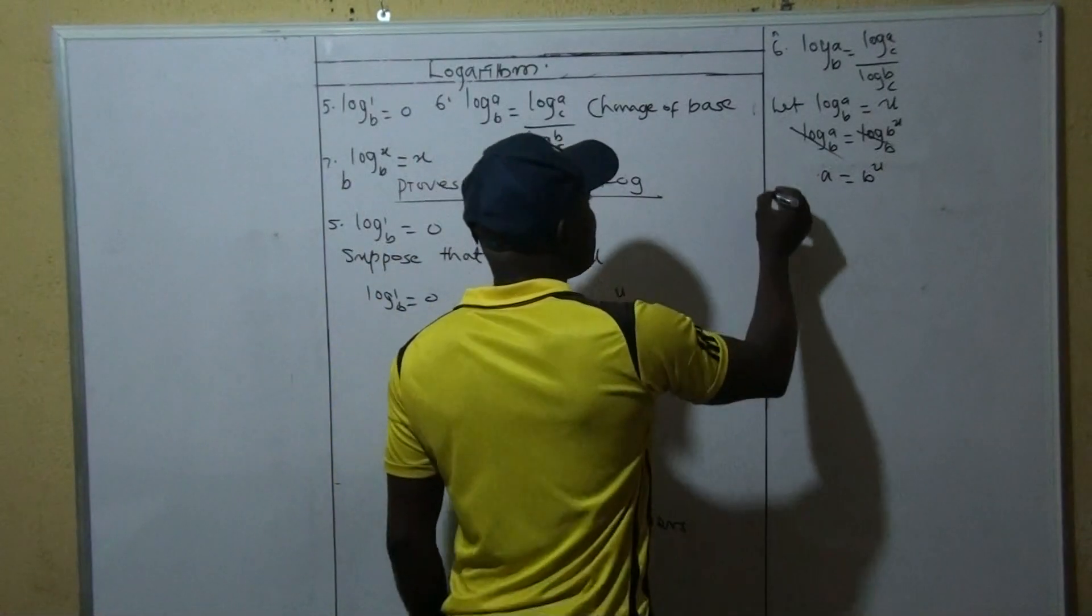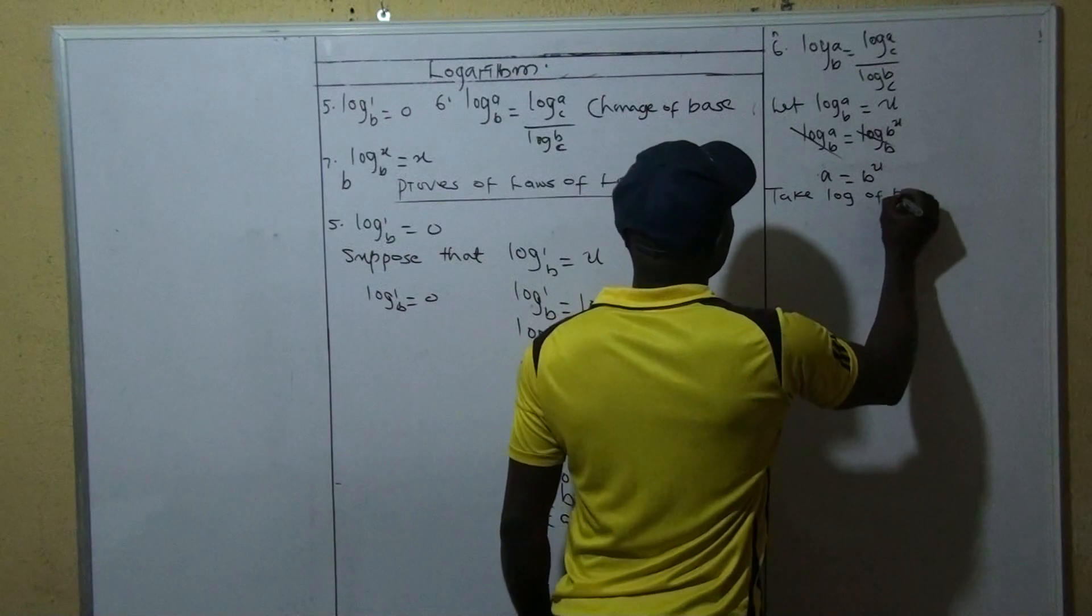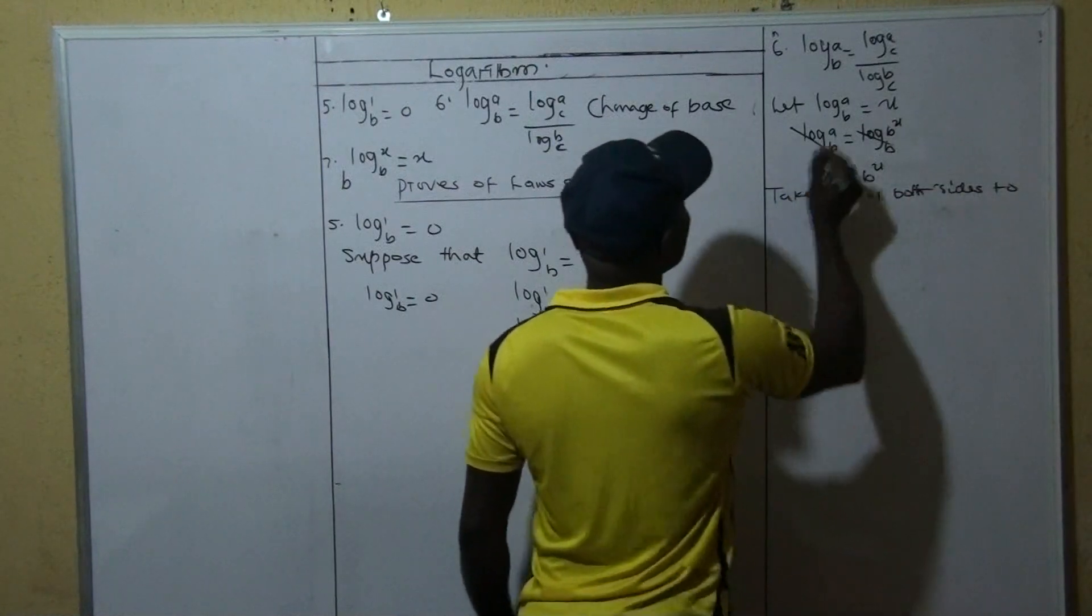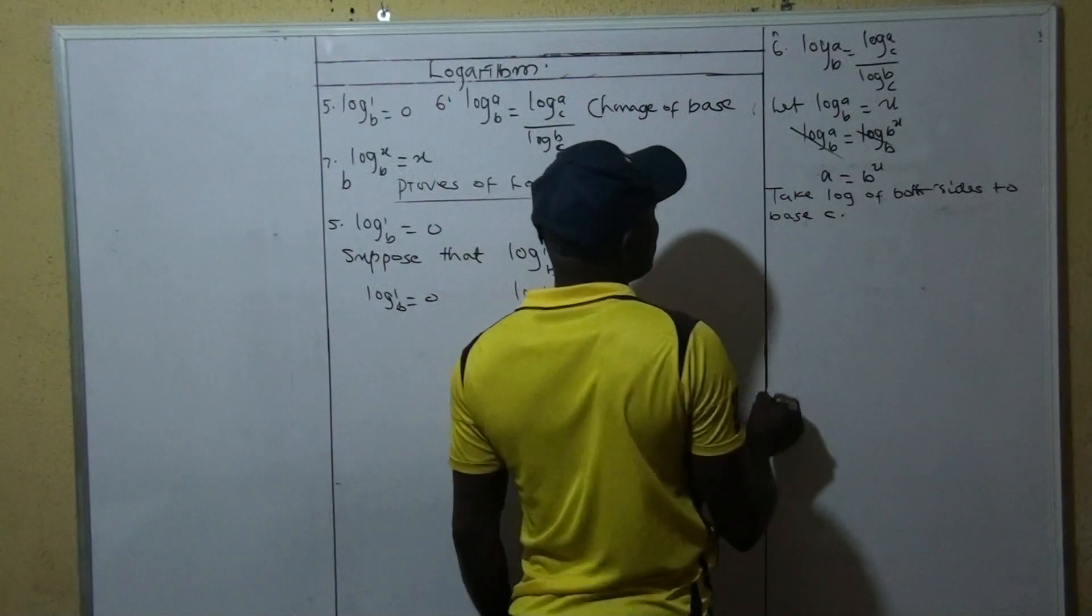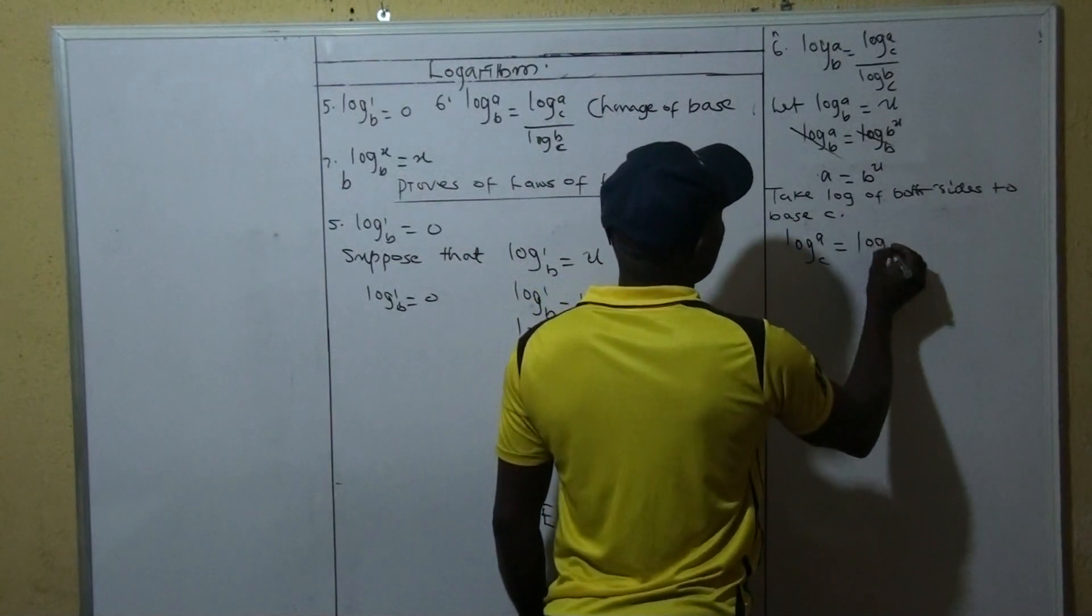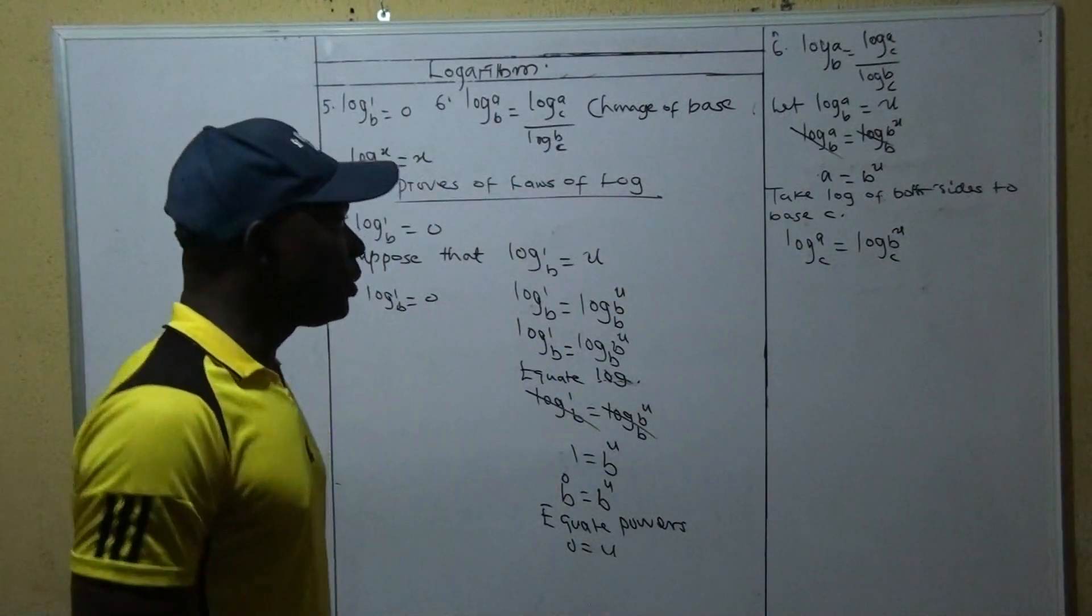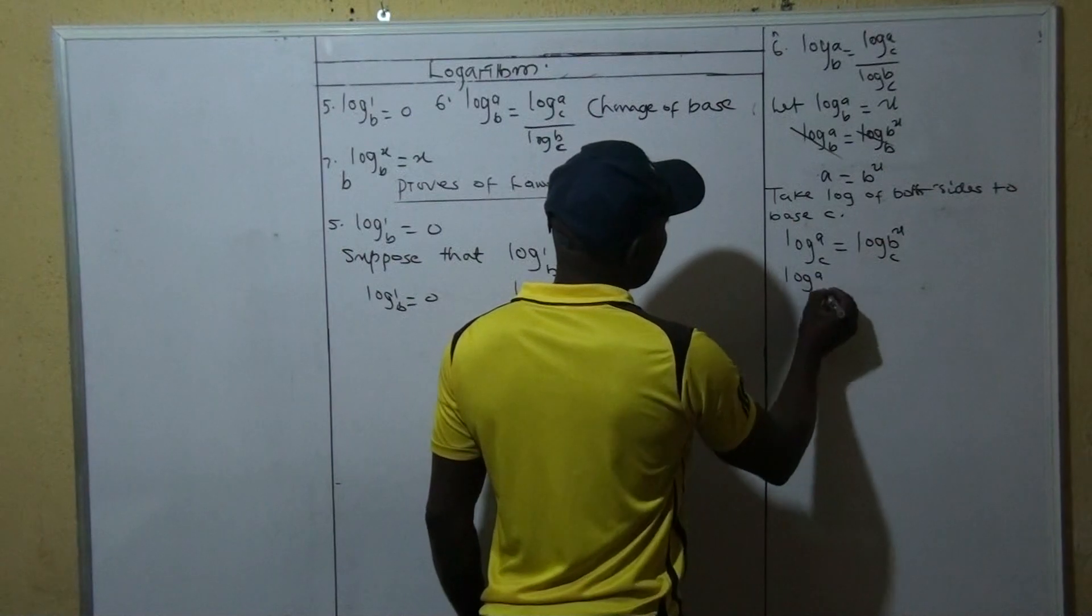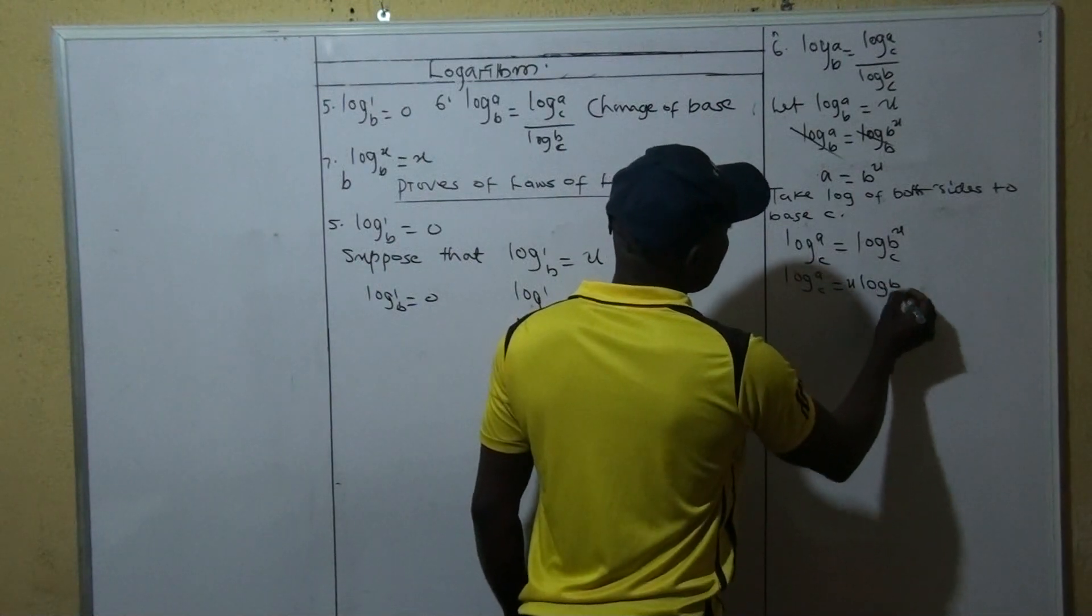So here I'm going to say take log of both sides to, since we're using C here, to base C. So we're going to say this is log A to base C is equal to log B raise power U to base C. Now we can say that this is log A to base C is equal to, this U will come here in form of power, U log B to base C.